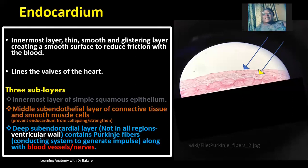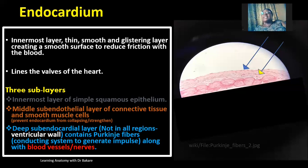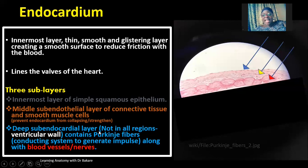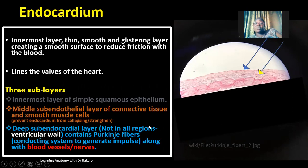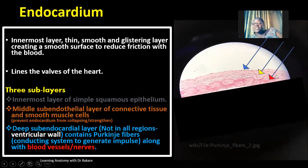More external to the sub-endothelial layer is the sub-endocardial layer, which is not seen in all regions of the heart — it is more prominent in the ventricular wall. Within this layer, we have Purkinje fibers, which are part of the conducting system of the heart and help to generate impulses. They also contain blood vessels and nerves. The Purkinje fibers appear larger than the cardiac myocyte and form a network that receives signals and transmits excitation.